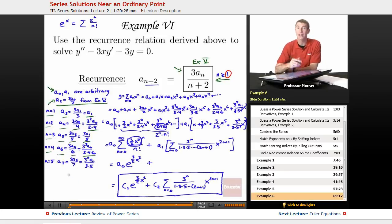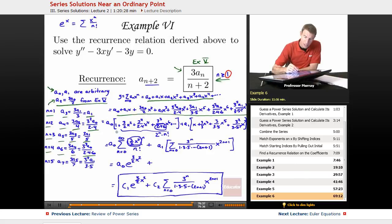So we got all these higher coefficients in terms of A0 and A1. So when we go back and look at our original series, our original guess, we can convert everything into A0s and A1s. And so we can factor out A0 times a bunch of terms, A1 times a bunch of terms.